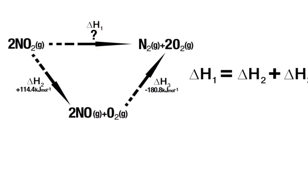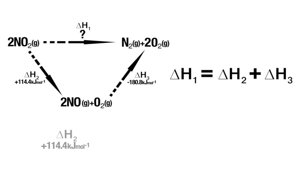We know the values in route 2. ΔH₂ is +114.4 kJ per mole. The plus indicates that the reaction is endothermic. It takes energy in from the surroundings. This was Miguel swallowing the glucose flies.